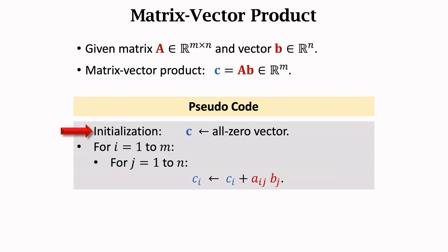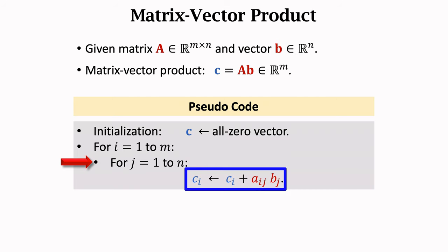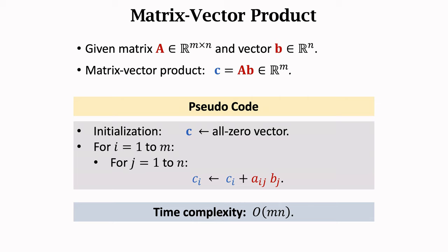Then perform the nested for loop. The outer loop lets index i grow from 1 to m — i is the index of an element of C. The inner loop lets index j increase from 1 to n, indexing the elements of vector b. Inside the inner loop, multiply A sub ij by B sub j and add the product to C sub i. Upon completing an inner loop, we get one element of vector C. The time complexity of matrix-vector multiplication is O(mn), due to the nested loop: the outer loop repeats m times and the inner loop repeats n times, so the total number of scalar multiplications and additions are both m times n.